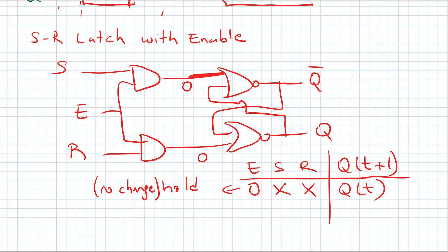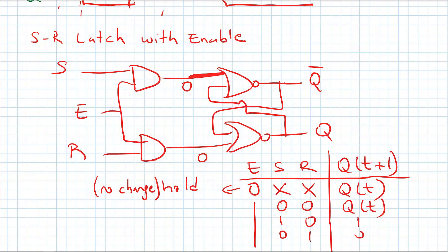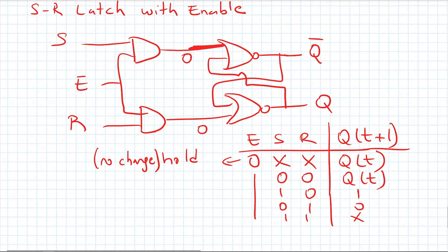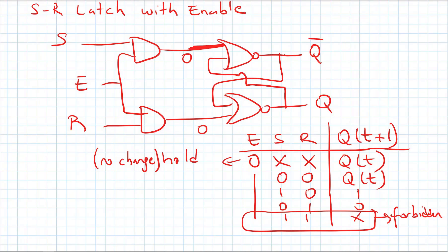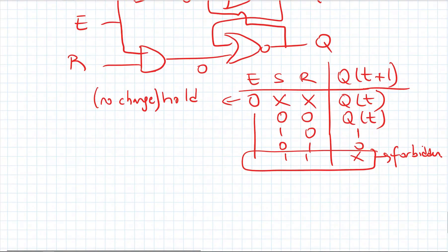If enable is one, then if I have S=0, R=0, I will be keeping my previous value — this is the hold state. With enable=1 and S=1, R=0, I will have a set. With S=0, R=1 I get a reset, and S=1, R=1 is the forbidden state. So by adding two AND gates to this NOR-based SR latch, I was able to design a latch with an enable signal. This is the function table for this latch.